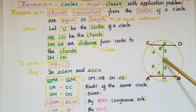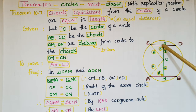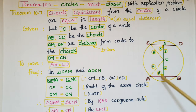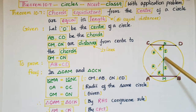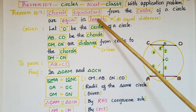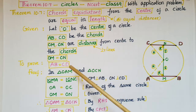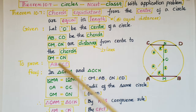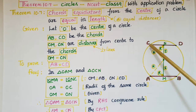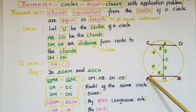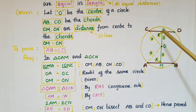The distances OM and ON are perpendicular lines. Given in the problem is that OM is equal to ON, and we have to prove that the chord lengths are equal — that is, AB is equal to CD.